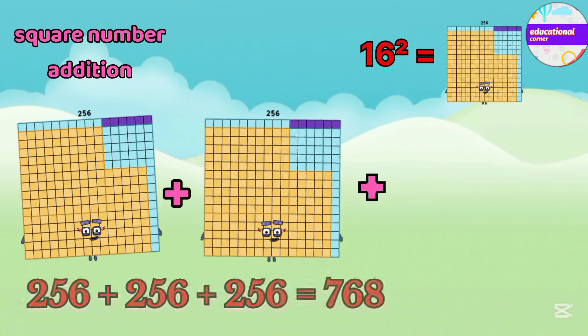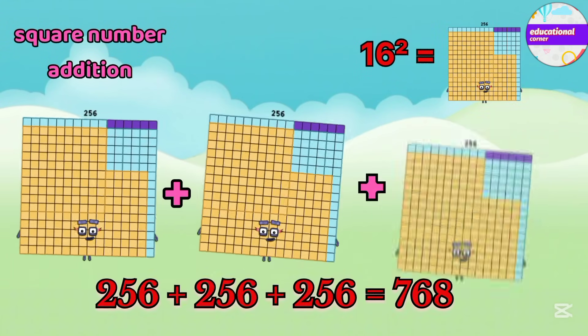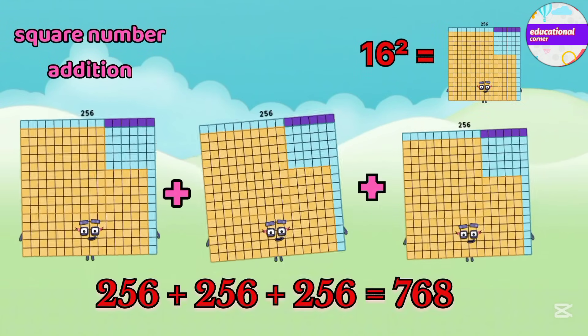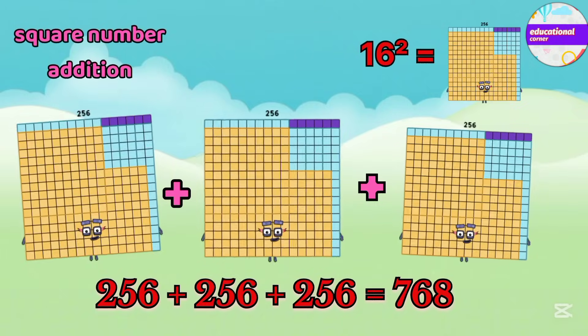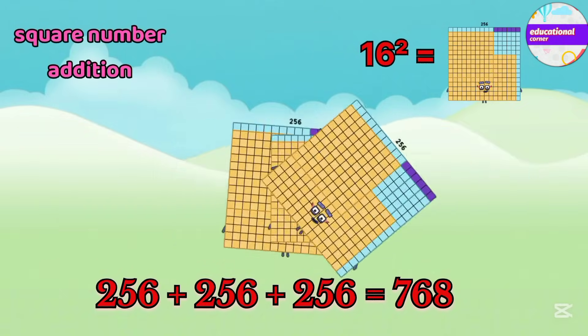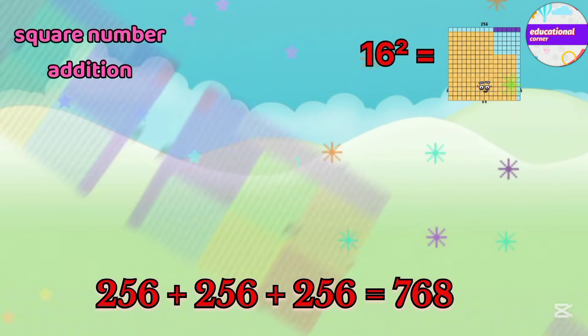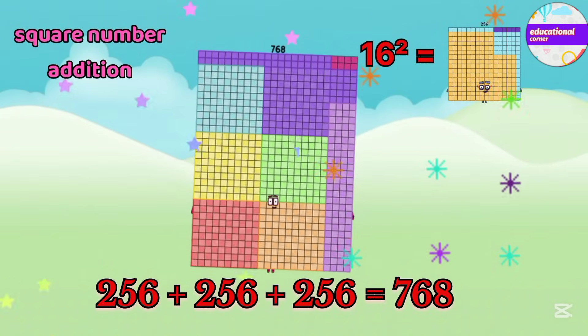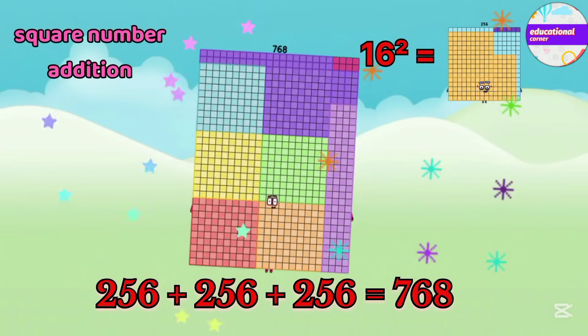256 is the square of 16. 256 added three times, the answer is 768.